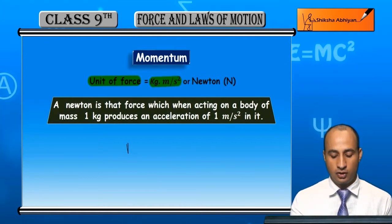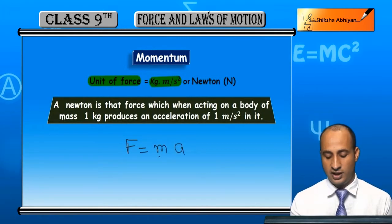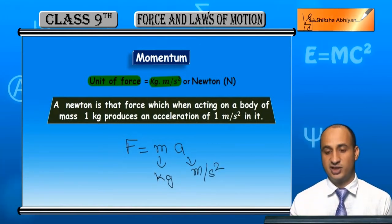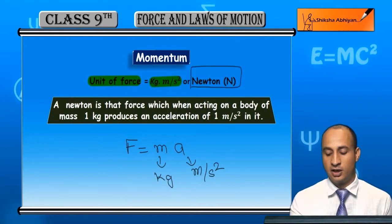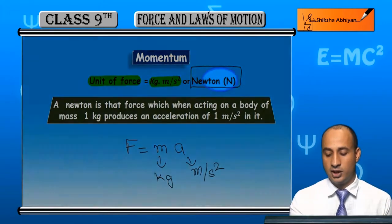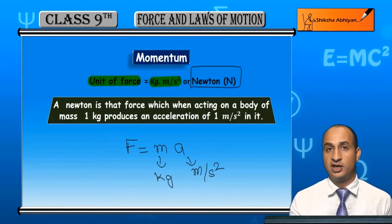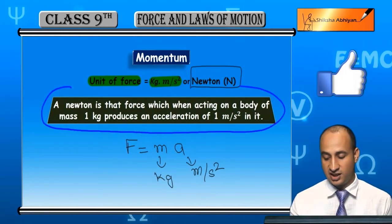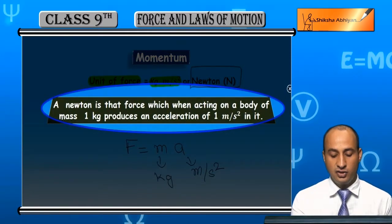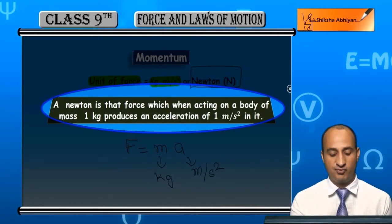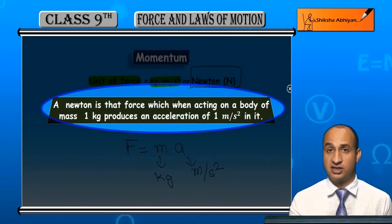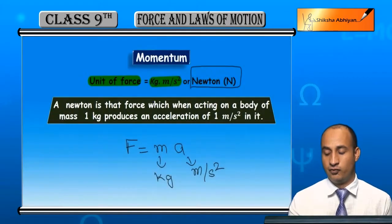Ab iske based concepts dekhte hain. Unit of force kya hogi? F = m into a, jahan m kg mein hai aur acceleration meter per second square mein hai, to unit hogi kilogram meter per second square. Isko hum Newton kehte hain. Force ki complete unit Newton hai. Ek Newton force define karein: 1 Newton woh force hai jo 1 kg mass ki body par apply karein aur us body mein 1 meter per second square ka acceleration produce kare — aise force ko 1 Newton kehte hain.